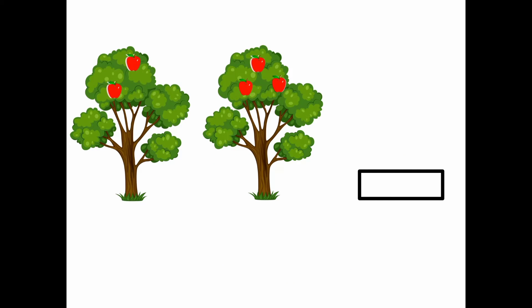Here we have two trees. The first tree has one, two, two apples. And the second tree has one, two, three, three apples.